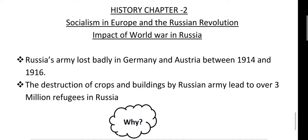Russia's army lost badly against Germany and Austria between 1914 and 1916. The First World War led to large casualties — there were 7 million casualties by 1917. The war lasted from 1914 to 1918, but the Russian army withdrew from the war in 1917 due to the enormous loss of life, deciding they would no longer be involved.